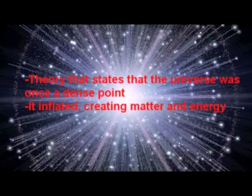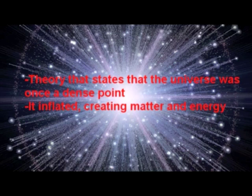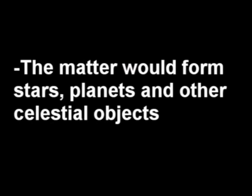Hello everybody, you'll be learning about the solar system. First of all, let's talk about how the solar system was formed. There is this theory that states that the universe was once an extremely dense point. It suddenly and rapidly inflated into the universe we see today, creating all matter and energy during the inflation. The matter would eventually form stars, planets, and other celestial objects. This is much the case with our solar system. Matter eventually accumulated and ignited to create our sun. The leftover particles formed a disk around our sun and eventually turned into everything in our solar system.